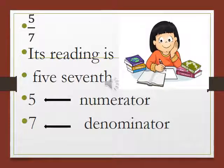Denominator means down. D, down, denominator. So 7 is the bottom number and 5 is the top number. It is numerator.